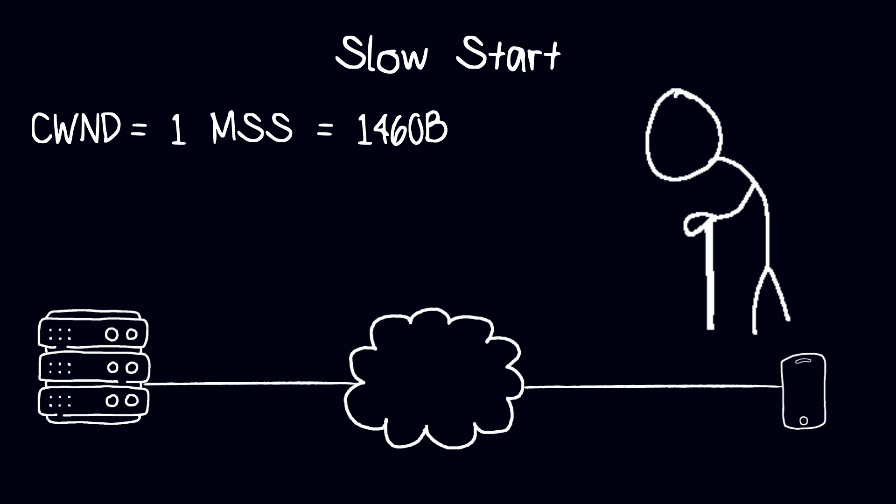After sending the initial packets, the sender waits for ACKs from the receiver. For every ACK received, the sender will increase the congestion window by one segment size. With this exponential growth, the sender will quickly probe the network's capacity.